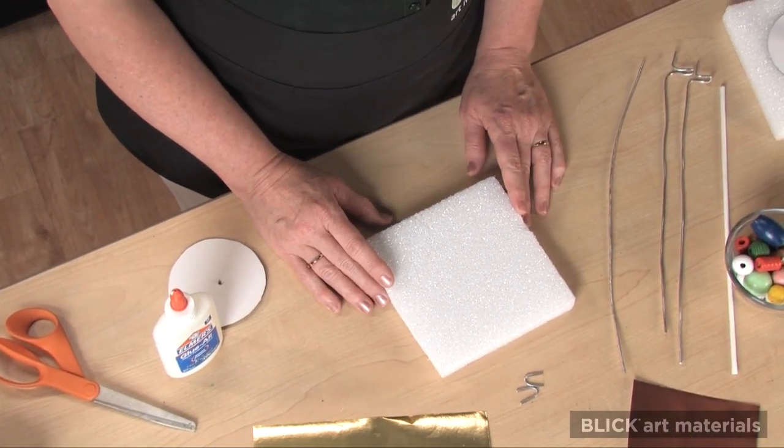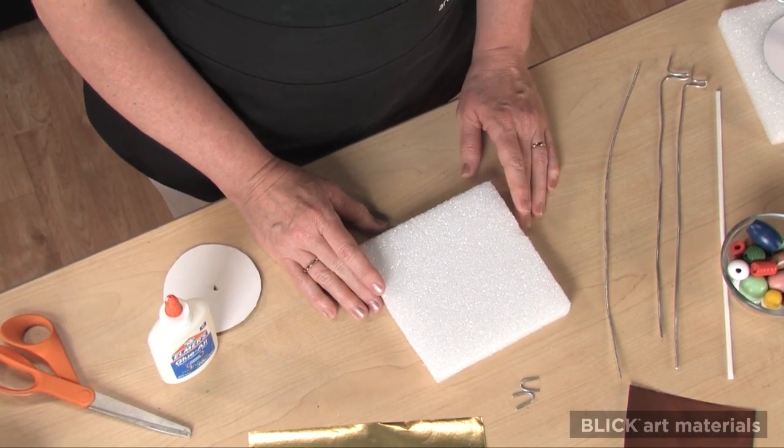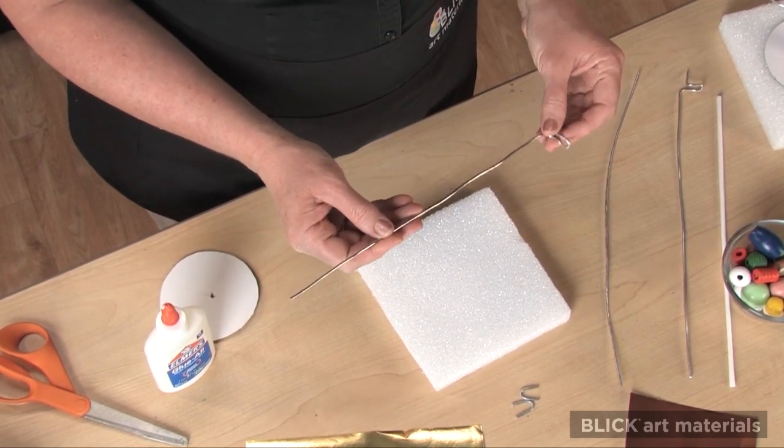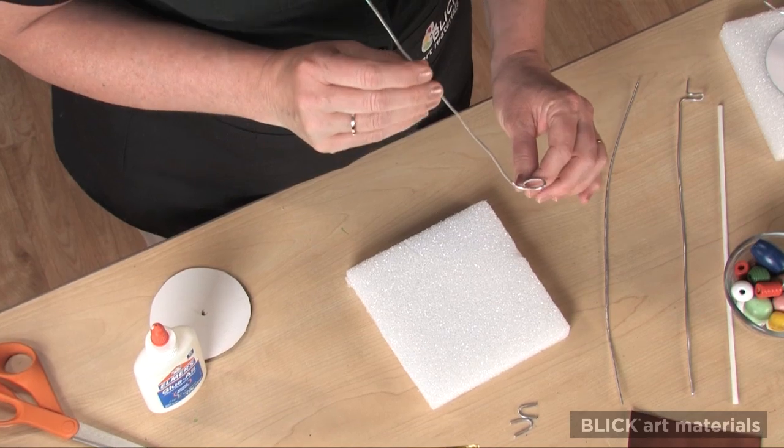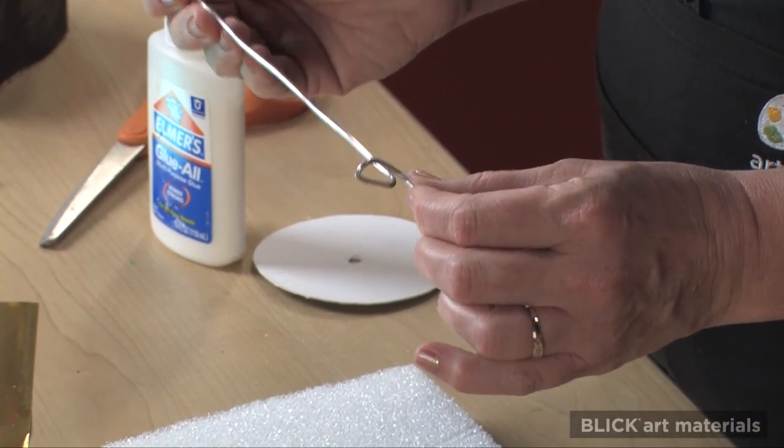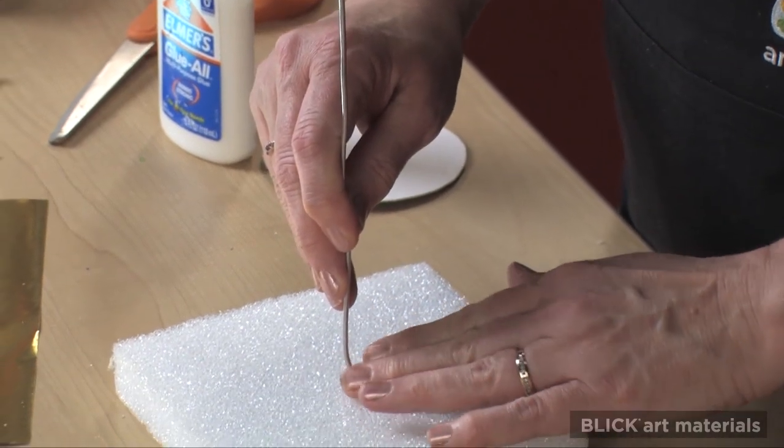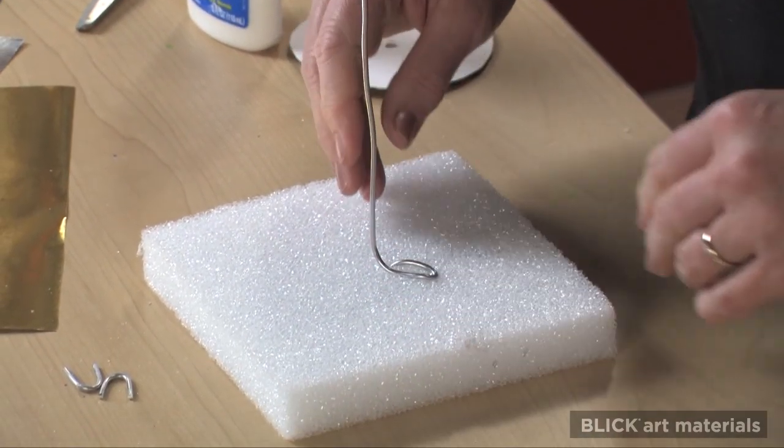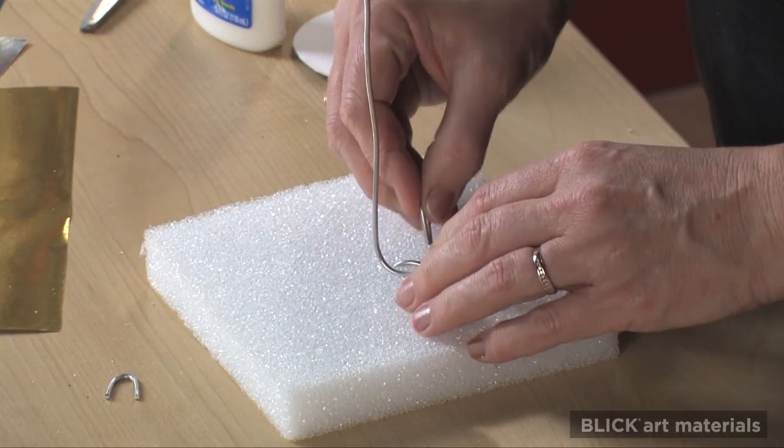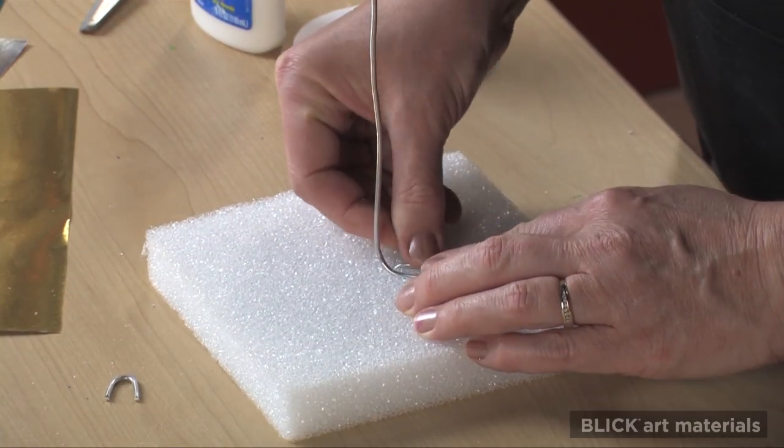Let's start from the bottom. Styrofoam makes a great base. Next, take a piece of sculpture wire for a vertical hub. Towards the bottom, I've formed a circular foot, then bent the remaining wire so that it can be pushed into the styrofoam. I then form two small U-shaped pieces, which I'm using to secure the wire to the base.